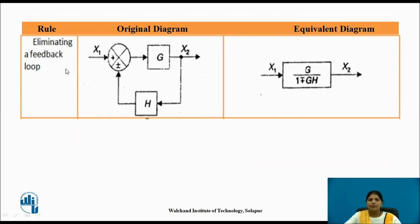The next rule is eliminating a feedback loop. Here this is a summing point and this one is the takeoff point. G is the forward path and H is the feedback path. Forward path goes from input to output, and feedback path goes from output to input. To eliminate a feedback loop, use the formula: G upon 1 minus-or-plus G into H. If there is a positive sign at the summing point, write a minus sign in the formula; if there is a minus, write a positive sign.